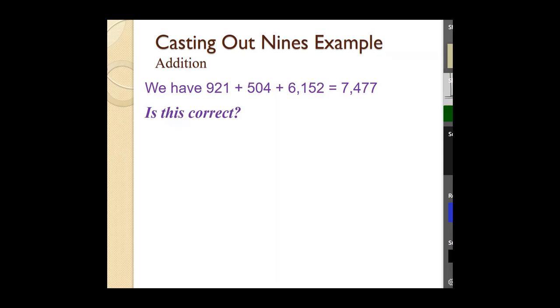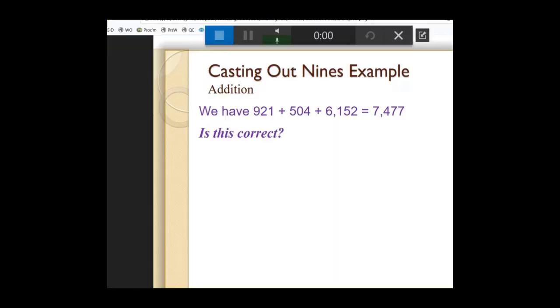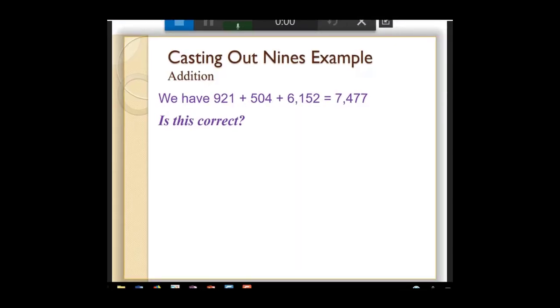The next example I would like to do is an example of addition. So here we have 921. I can cast out that 9, and that gives me a 3. 504. 9 gets casted out, I get 0.